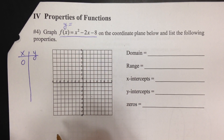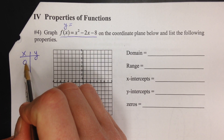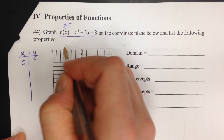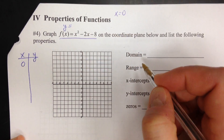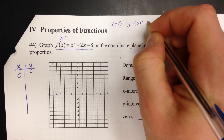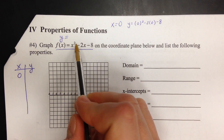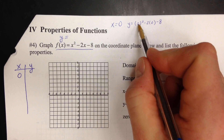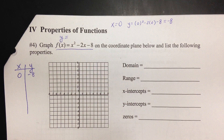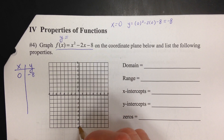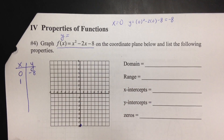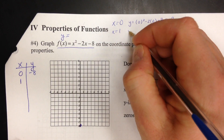Let's start with zero — zero is probably the easiest number to plug in. If we put zero into the function, for all the x's we put zeros in: zero squared minus two times zero minus eight. Zero times anything is zero, so we end up with negative eight. So on our graph, the point zero comma negative eight is right here.